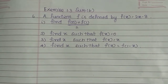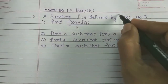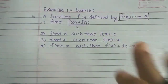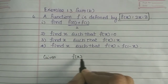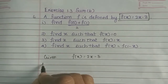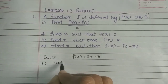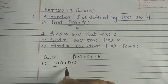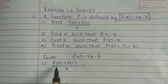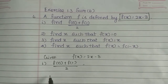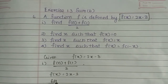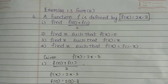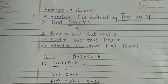This is very easy. If you want to evaluate a function, you substitute the given value and answer the question. Given f(x) = 2x - 3. First option: find f(0) + f(1)/2.